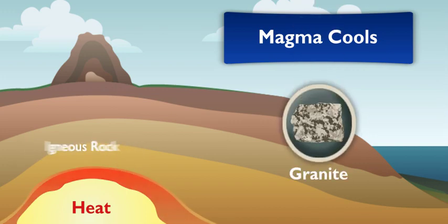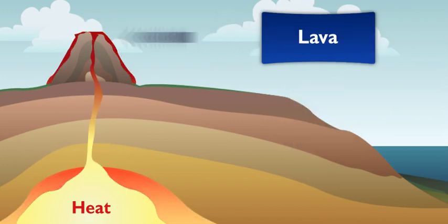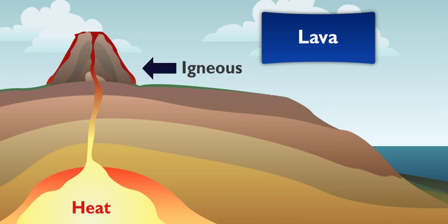Other times, magma bursts from a volcano as lava. When it cools, that's igneous rock, too, like pumice.